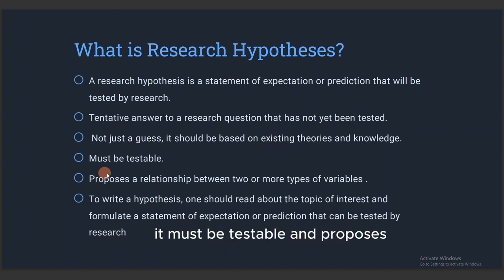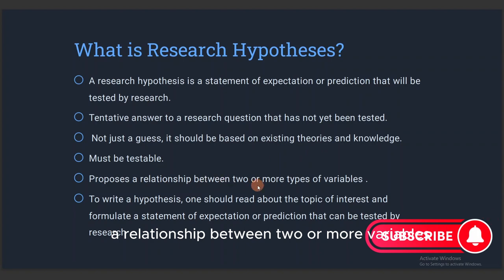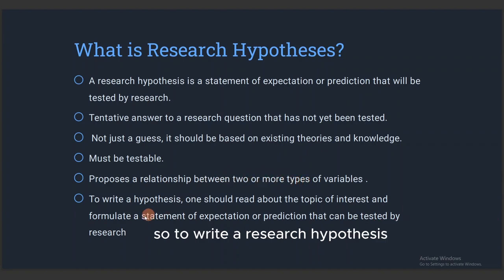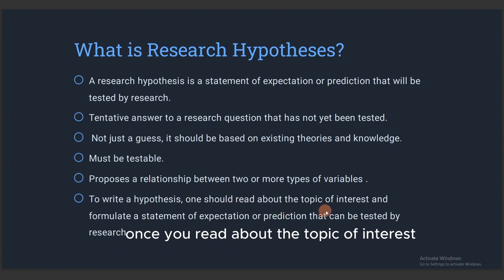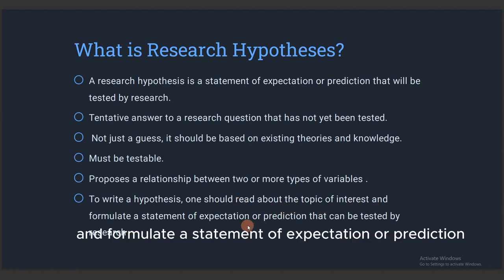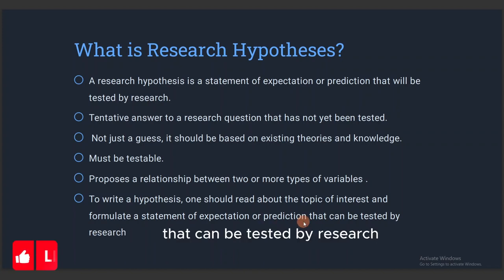A research hypothesis must be testable and must propose a relationship between two or more variables. To write a research hypothesis, one should read about the topic of interest and formulate a statement of expectation or prediction that can be tested by research.